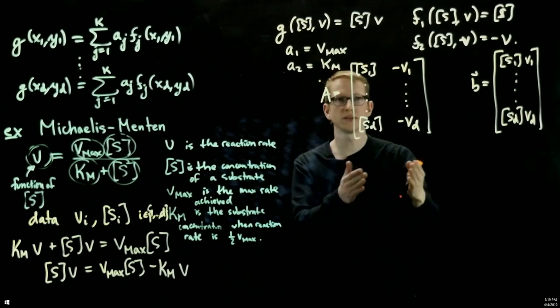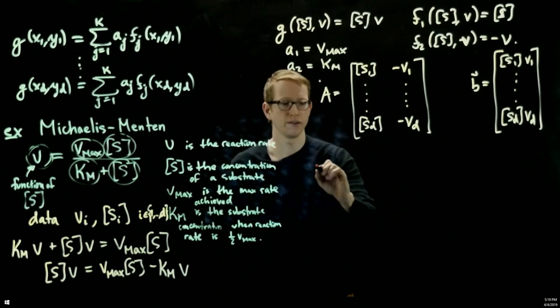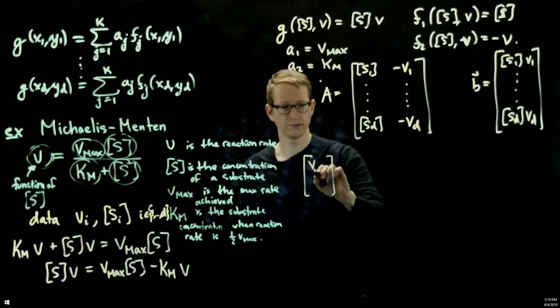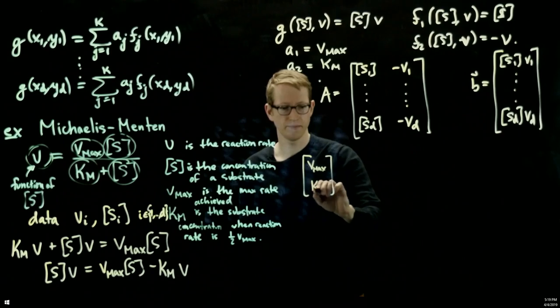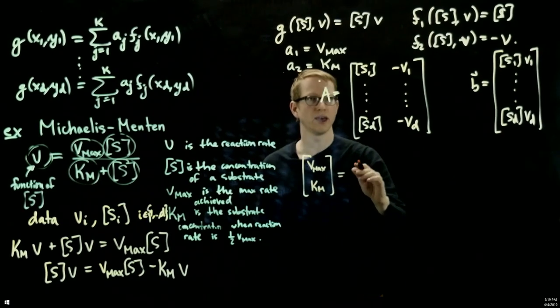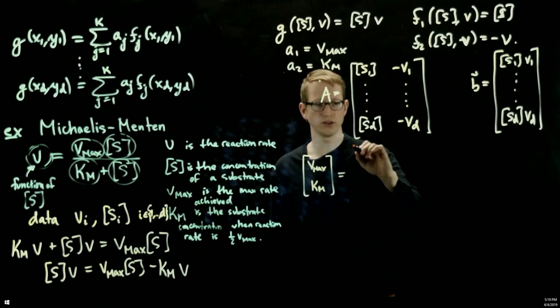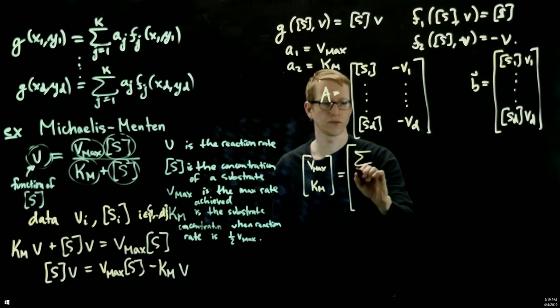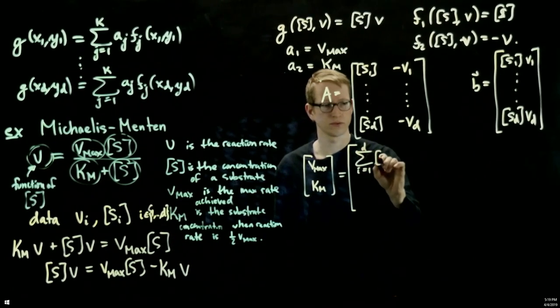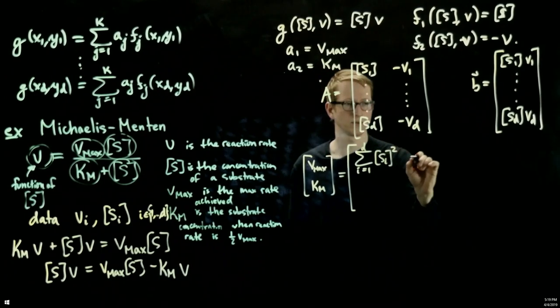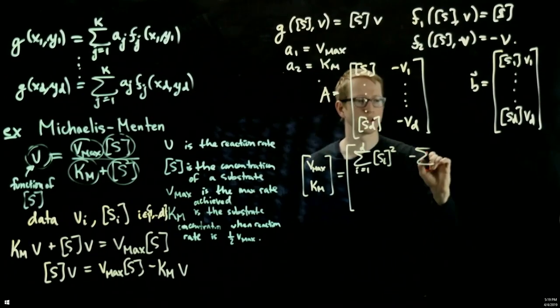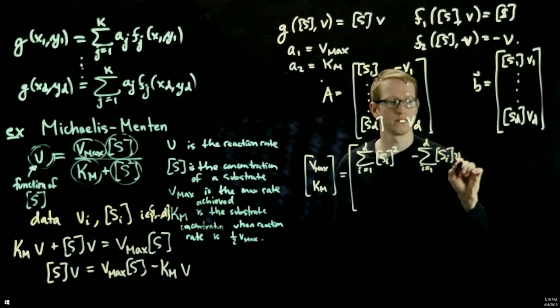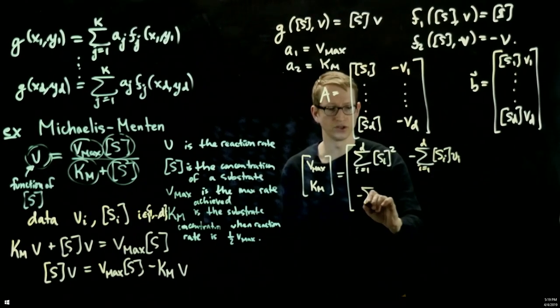And so we can compute the transpose of this, multiply the two matrices, work all that out, and we would find, after we do all of that, that we get vmax, kM, equals A transpose A inverse. So I'll just write down what A transpose A is. Because you can compute it explicitly, it's very similar to the calculation when we computed the linear regression in the general case.